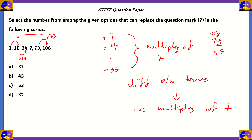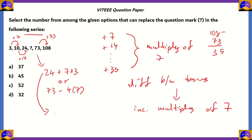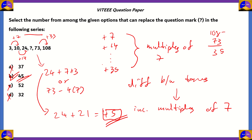That means the question mark minus 24 would be 3 times 7 (which is 21), and 73 minus the question mark would be 4 times 7 (which is 28). Using the first method: 24 plus 21 equals 45. Using the second method: 73 minus 28 also equals 45. So option B, 45, is the right answer. The completed series is 3, 10, 24, 45, 73, and 108.